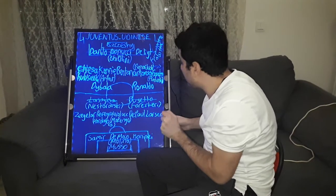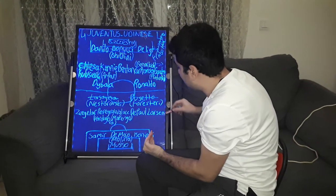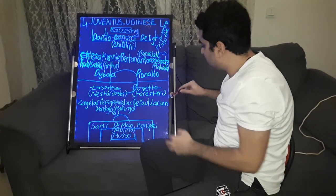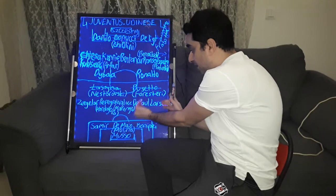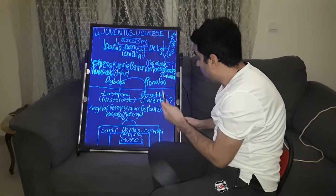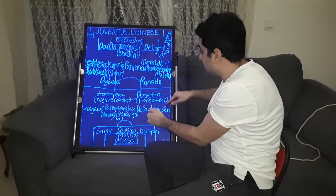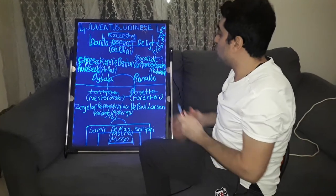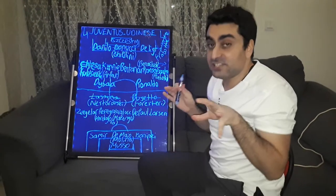In the second half, sometimes Udinese developed attacks from the wings, from the left with Sergei Lahr, from the right with Larsen. Rodrigo de Paul came close to right and supported the attacks. They found one goal, developing attacks from the left of Juventus. Zegeler scored the goal.